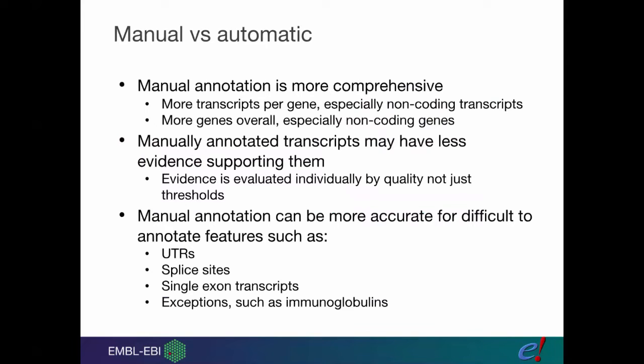Manual annotation can also annotate really fiddly, difficult to annotate features such as UTRs, splice sites, single exon transcripts, and immunoglobulins which undergo somatic recombination. They're not kind of classic genes. They're very different, making them very difficult to annotate.